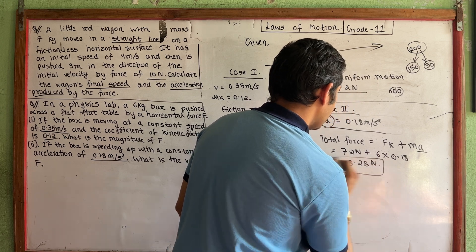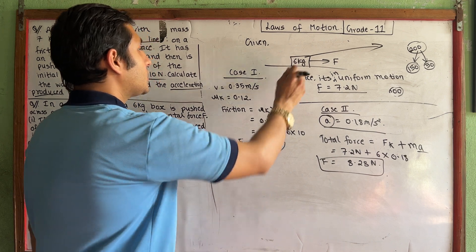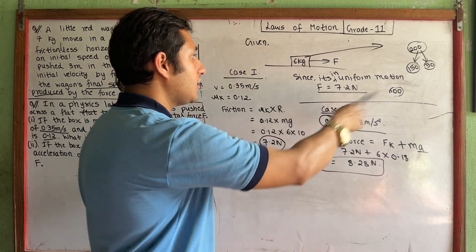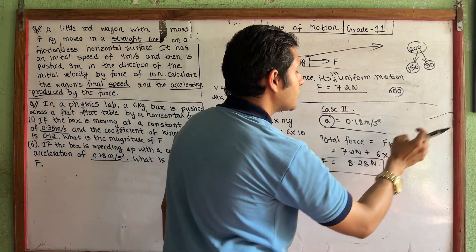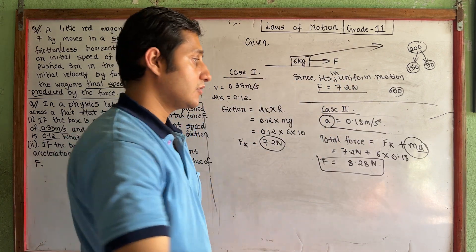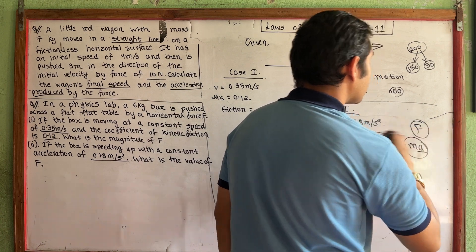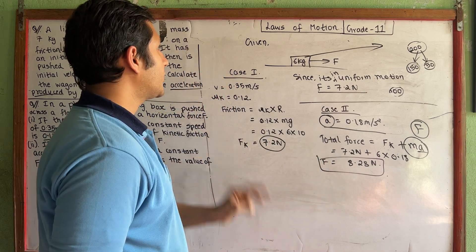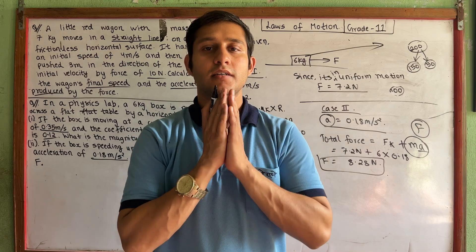So to summarize: in the case of constant speed, applied force equals friction force. In the case of acceleration, applied force equals friction force plus mass into acceleration. Thank you for the class. Namaste.